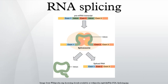The splice donor site includes an almost invariant sequence GU at the five-prime end of the intron, within a larger, less highly conserved region. The splice acceptor site at the three-prime end of the intron terminates the intron with an almost invariant AG sequence. Upstream from the AG there is a region high in pyrimidines, or polypyrimidine tract. Upstream from the polypyrimidine tract is the branch point, which includes an adenine nucleotide.